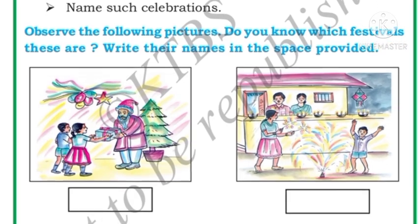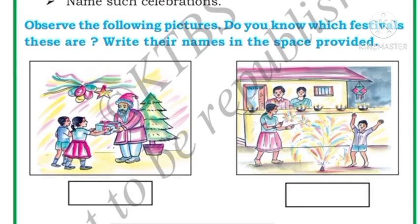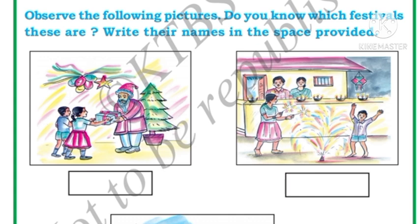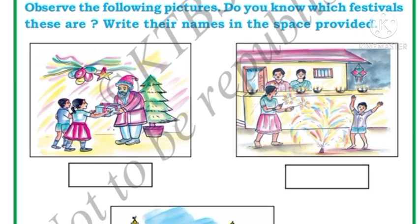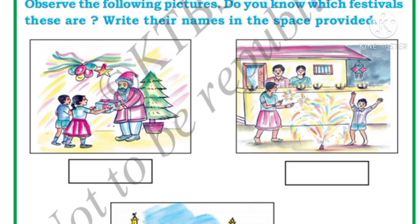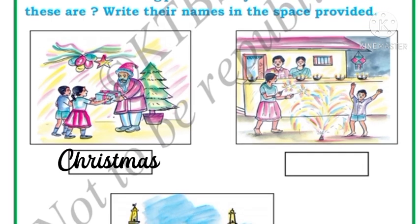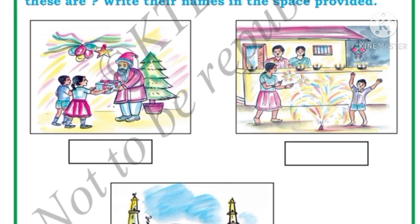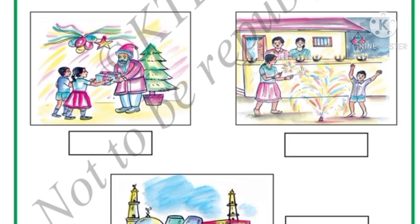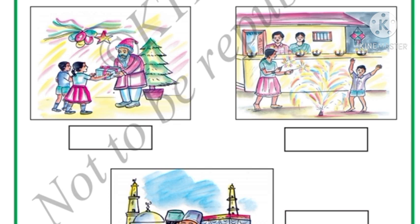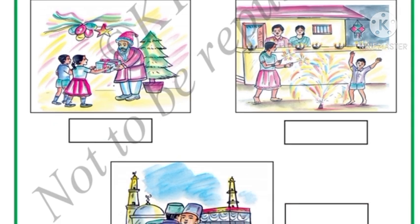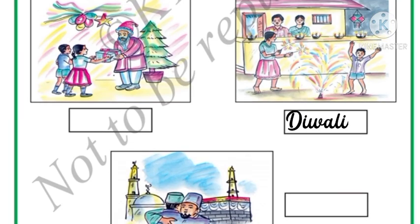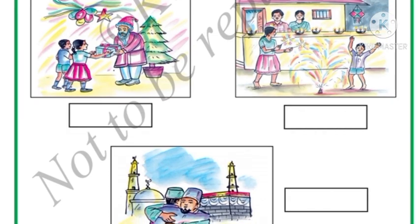Now observe the following pictures — do you know which festivals these are? Write their names in the space provided. You have to see each picture and write the name of the festival. This one is Christmas — you can see Santa Claus giving gifts to the children. Next, this picture shows Diwali — you can see all the children bursting crackers. Diwali is celebrated by Hindus.